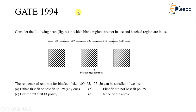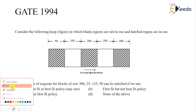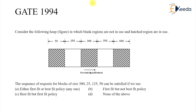We have already seen the part of first fit, best fit, next fit and worst fit. This problem says: consider the following heap in which blank regions are not used and hatched regions are in use. So these are the used parts and unused parts.